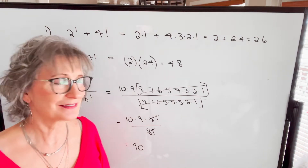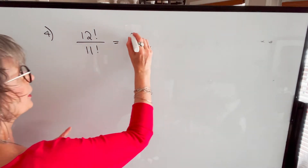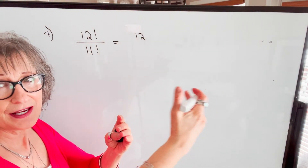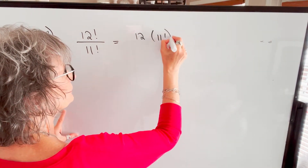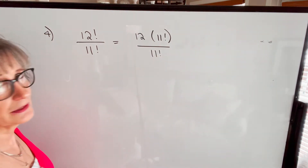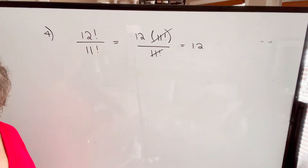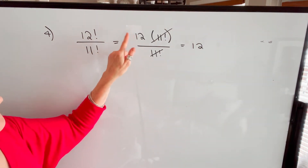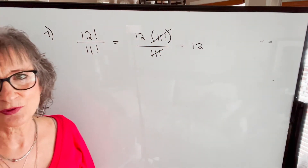Let's look at some more examples. In our next example, we have 12 factorial divided by 11 factorial. 12 factorial will be 12 times 11 times 10 and so on — from 11 down, that product will be 11 factorial. The denominator is 11 factorial, so we can cancel that, and our answer is just 12. So if you recognize that this factorial will be this number times the factorial of the next lowest number, that's going to allow you to do that simplification.